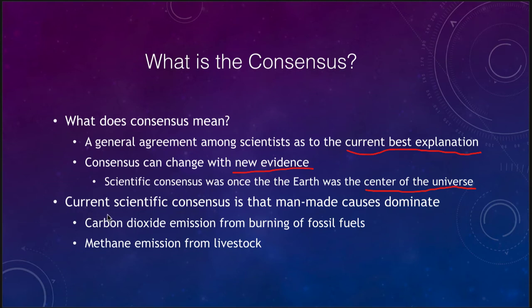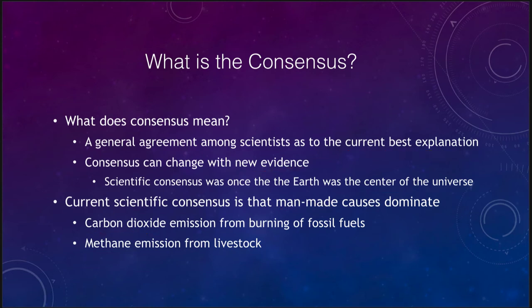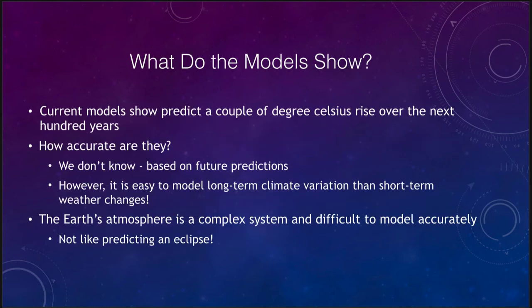The current scientific consensus is that man-made causes dominate the changes to the climate, including carbon dioxide from the burning of fossil fuels and methane emissions from livestock. Both are very important in terms of putting excess concentrations of those greenhouse gases into the atmosphere. Models currently predict a couple of degrees of rise over the next hundred years, though the question is of course how accurate they are.